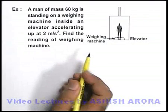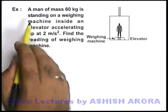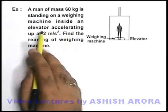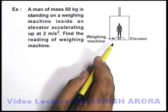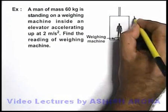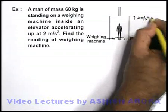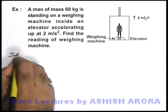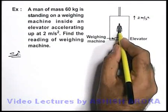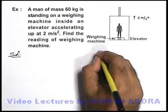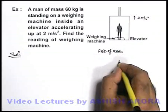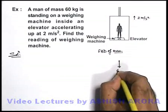Let us take an example to understand the concept of a weighing machine. A man of mass 60 kg is standing on a weighing machine inside an elevator which is accelerating upward at 2 meters per second squared. We are required to find the reading of the weighing machine. In the free body diagram of the man, he experiences his weight 60g in the downward direction.